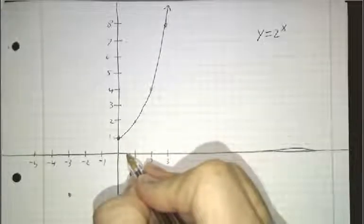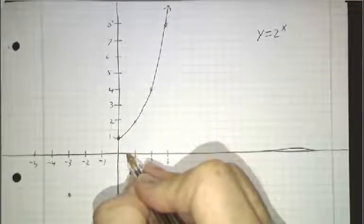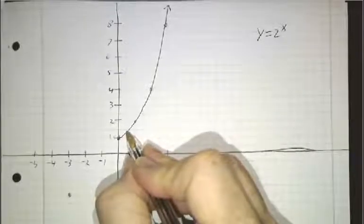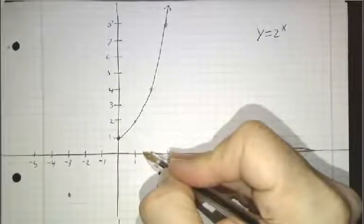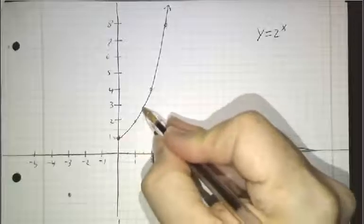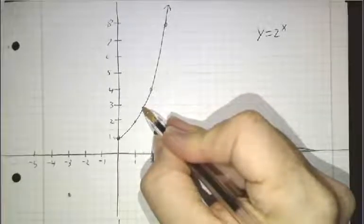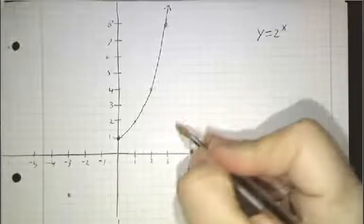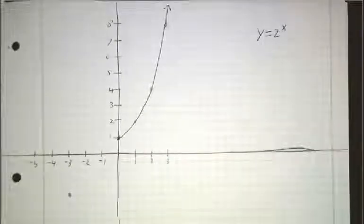Now, what is f of 1/2? f of 1/2, by definition, is the square root of 2. That's about 1.4. What's f of 3/2? That's the square root of 8, which is a little under 3. It's twice the square root of 2, and so on. It's growing very rapidly.